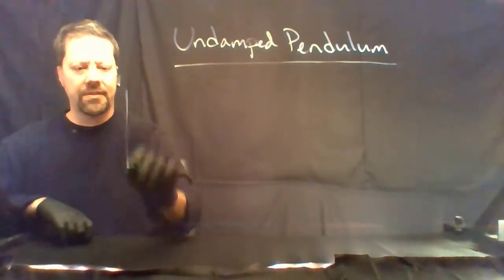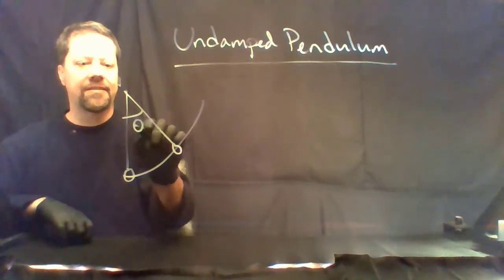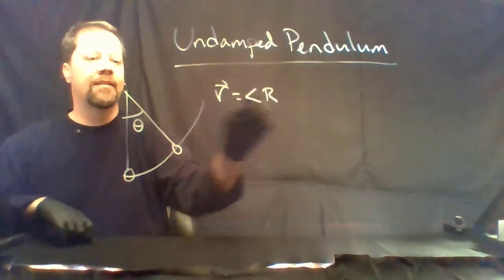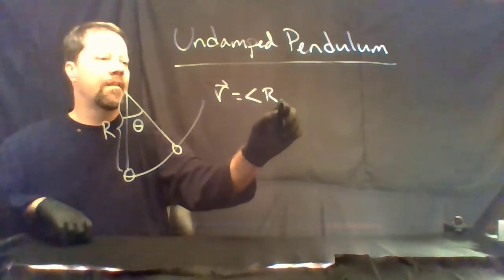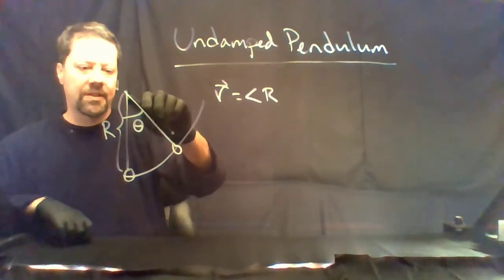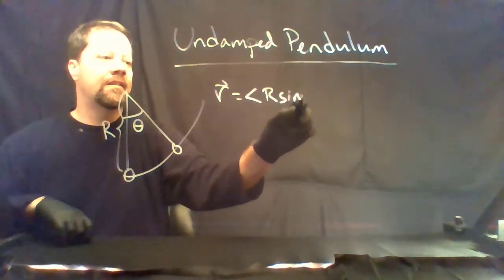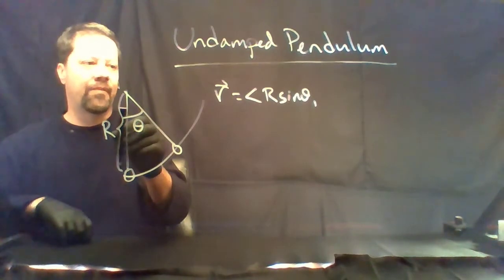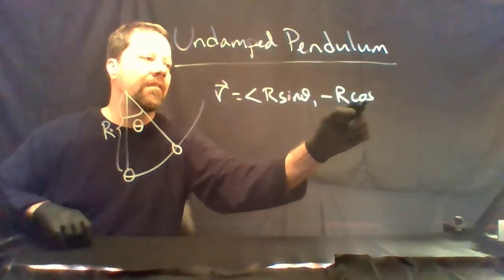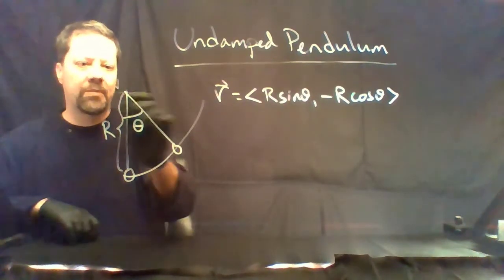If a pendulum starts straight down and then slides out in this direction, making an angle theta, the position vector is given as follows. Suppose r is the length of the pendulum. The x-coordinate is r sine theta, since when theta is zero, x will be zero. The y-coordinate will begin negative, so we have negative r cosine theta, describing positions of points in the xy-plane.